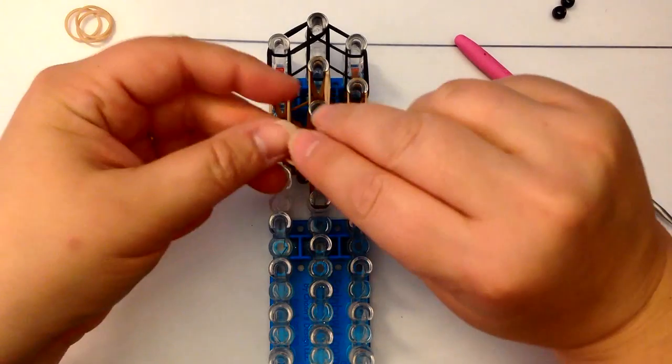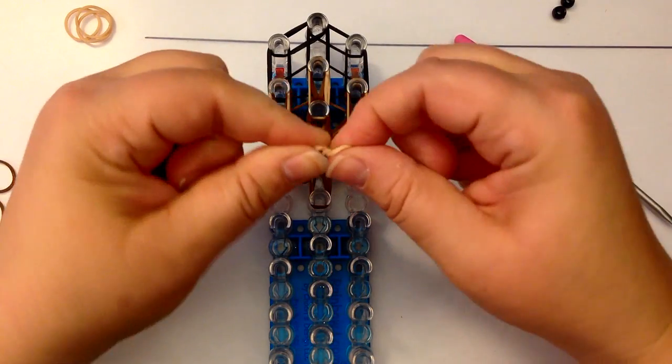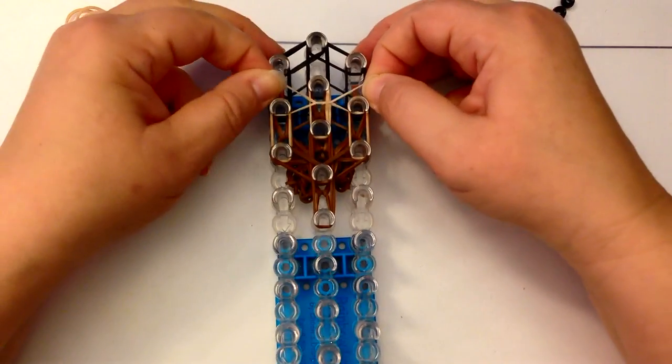We're going to stretch a white band, a skin tone band. We're going to twist it once, twice, and three times and stretch it across.